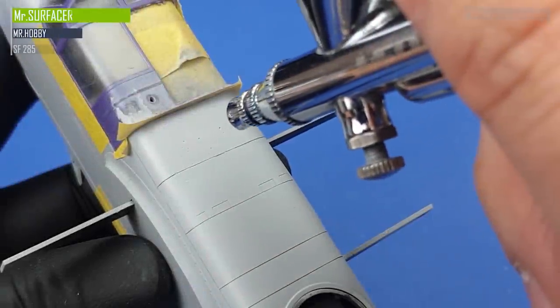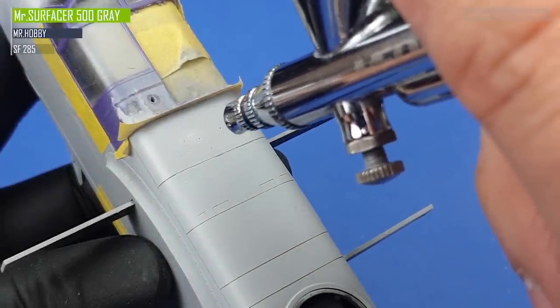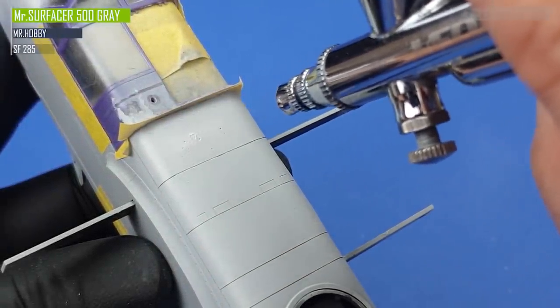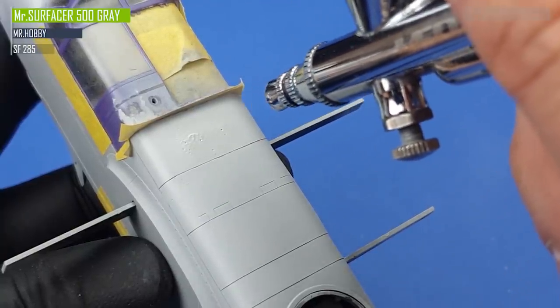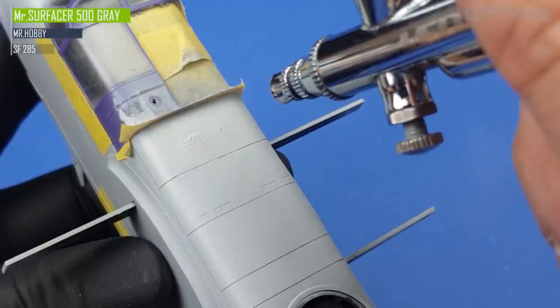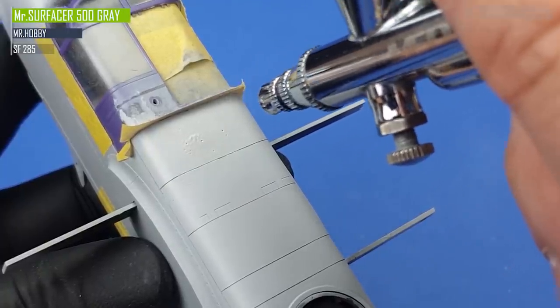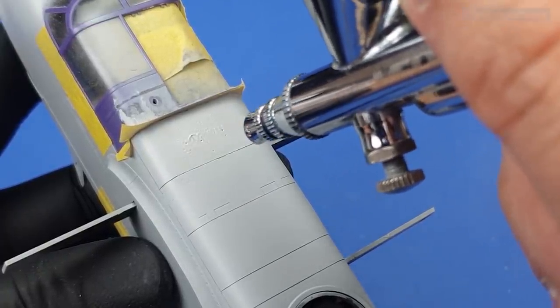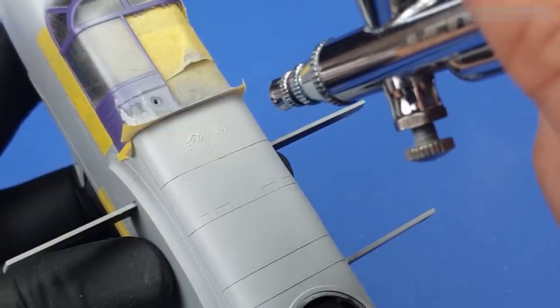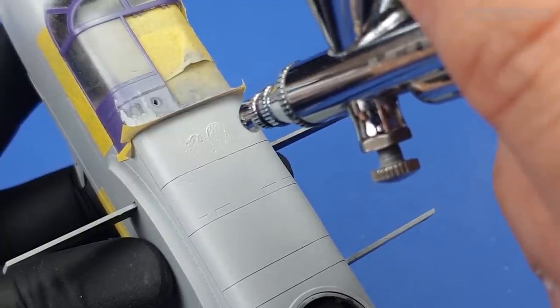And in this case comes Mr. Surfacer 500 hosed on with the airbrush, and I mean that literally. I build up a nice layer of this filler primer and the leveling thinner helps it flow and level itself out. After another wet sanding session we are ready to rectify the panel lines lost during the process.